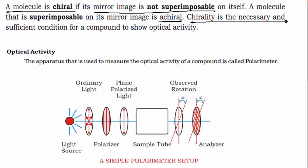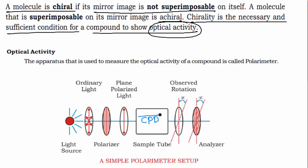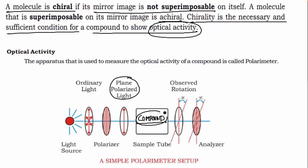Chirality is the necessary and sufficient condition for a compound to show optical activity. Optical activity means if you put that compound inside a sample tube and pass plane polarized light through it, if that plane polarized light changes its rotation while passing through the compound, then the compound is showing optical activity, which means it is chiral.